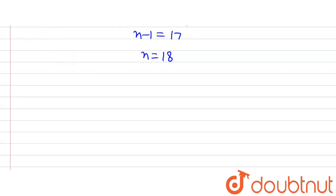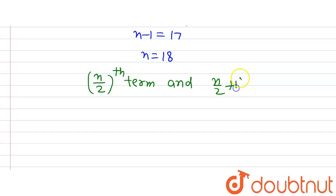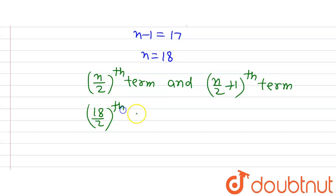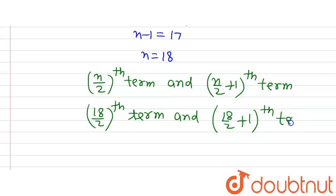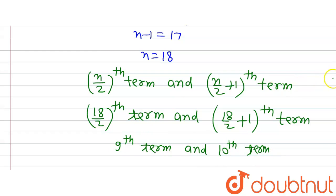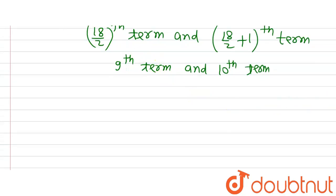Now we need to find the middle terms. For an even number of terms, the two middle terms are the (n/2)th term and the (n/2 + 1)th term. Putting in n equals 18: 18/2 equals 9, and 18/2 plus 1 equals 10. So the two middle terms are the 9th term and the 10th term of the AP.